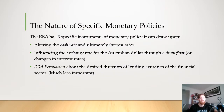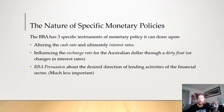There are specific instruments that the RBA uses in terms of monetary policy — three things they mainly do. They can alter the cash rate, which ultimately impacts interest rates. They can influence the exchange rate for the Australian dollar through what's called a dirty float, or change the interest rates, which also affects the value of the Australian dollar. A dirty float is basically when the RBA buys or sells a lot of currency to affect the value of the Australian dollar. And there's also RBA persuasion, which is about the desired direction of lending activities for the financial sector.